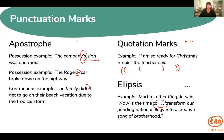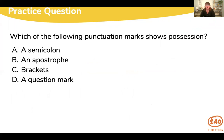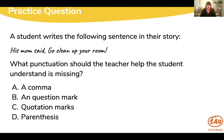Now let's take a look at a couple of practice questions. Which of the following punctuation marks shows possession? Hopefully when you see 'possession' you know that's an apostrophe. You can easily rule out brackets and question mark — most everybody knows a question mark goes at the end of a question. The next question asks you to apply this in an instructional context: a student writes 'His mom said go clean up your room' — what punctuation should the teacher help the student understand is missing? When you see the word 'said,' you know that's a quotation, so quotation marks are missing. Comma was already there, and you can rule out question mark since it's an exclamatory statement.